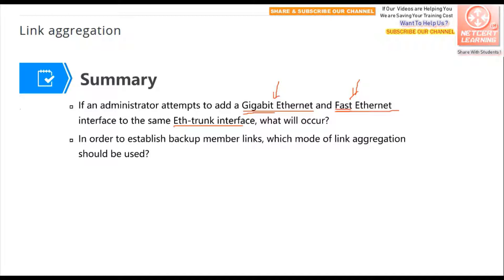The second question: in order to establish backup member links, which mode of link aggregation should be used? Link aggregation has two modes — manual mode and LACP mode. In manual mode, we cannot add advanced features because it is static. Only in LACP mode can we configure features such as backup member links. So we should use LACP mode.